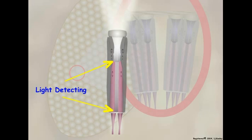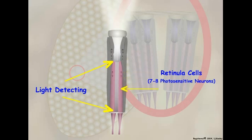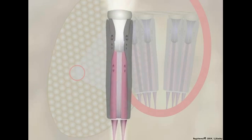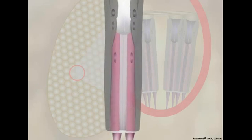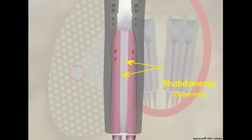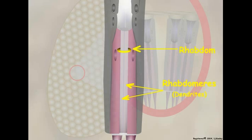The light-detecting apparatus of each ommatidium contains seven to eight light-sensitive photoreceptor cells called retinula cells. Retinula cells are actually photoreceptor neurons that detect wavelengths of light. The light-sensitive dendritic region of the retinula cell is the rhabdomere. Together, all of the individual rhabdomeres are referred to as the rhabdom.